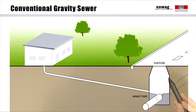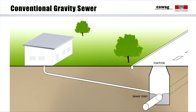Access manholes are placed at set intervals above the sewer, at pipe intersections and at changes in pipeline direction. When the sewer also conveys storm water, which is known as a combined sewer, sewer overflows are required to avoid hydraulic surcharge of the treatment plant. However, nowadays a separate drainage system for rainwater, or local retention and infiltration, are recommended instead, which leads to cheaper and more efficient systems.